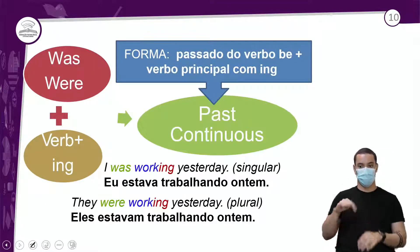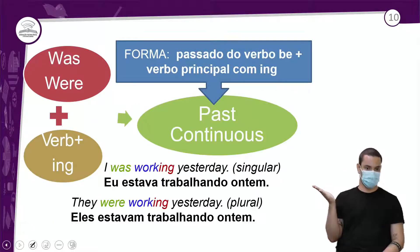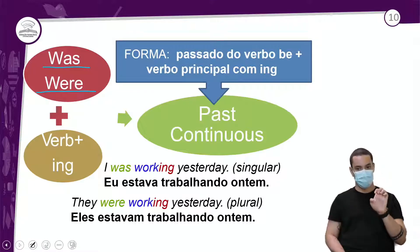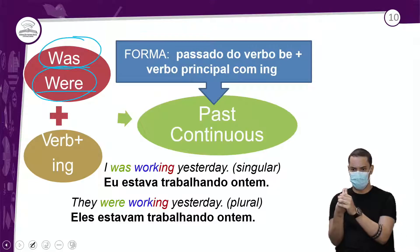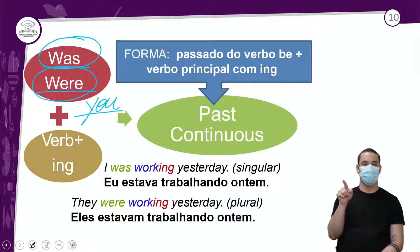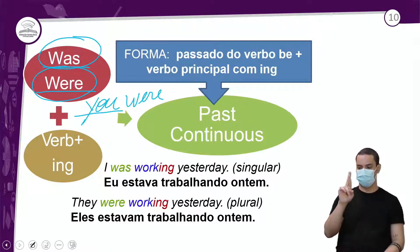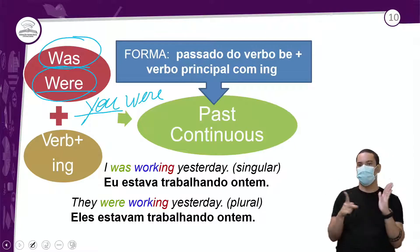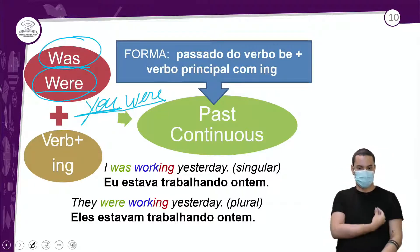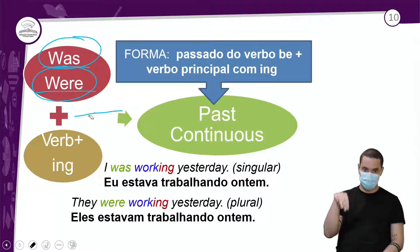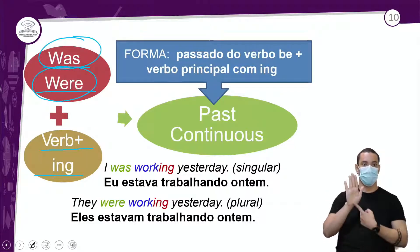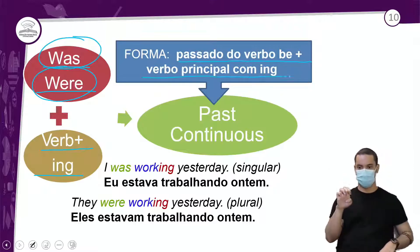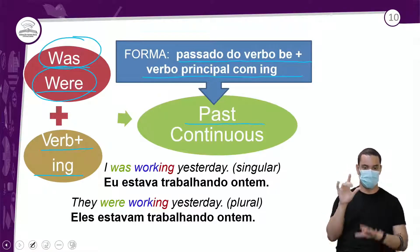Os dois verbos usados no past continuous são 'was' e 'were' — os dois verbos to be no passado. Cada um fica com um pronome pessoal específico: 'was' para o singular, 'were' para o plural. O 'you' — você/vocês — usa sempre o 'were'. Então: verbo to be no passado, mais o verbo principal com -ing, forma o past continuous.